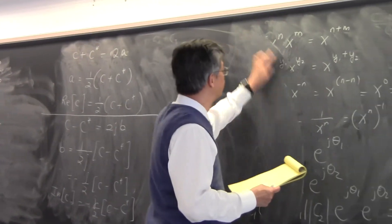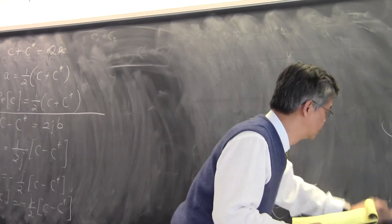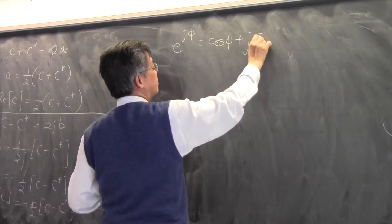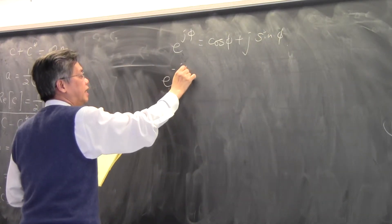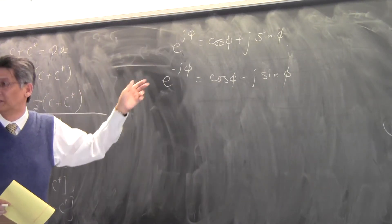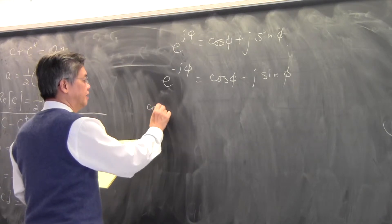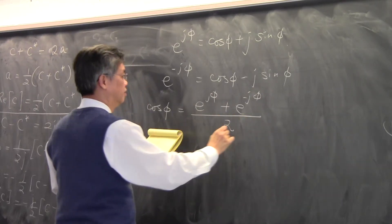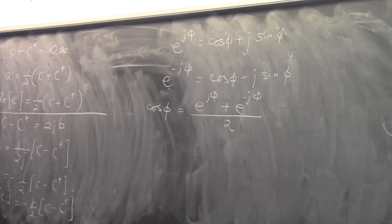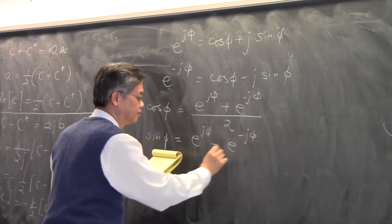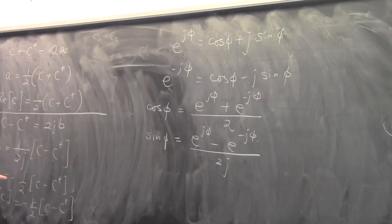Because of Euler's identity you can prove a number of things. You can prove that exponentiation to a complex number equals e^(jφ) = cosine φ + j sine φ. You can also prove that e^(-jφ) equals cosine φ minus j sine φ — that is just the complex conjugate of the expression above. And then you can prove quite easily that cosine φ, which is the real part, equals half of (e^(jφ) plus e^(-jφ)) by applying the real part formula.